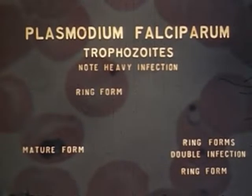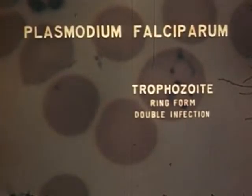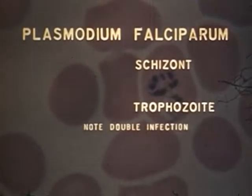Falciparum ring forms are generally more numerous and more prone to multiple infections and marginal forms than other species. Small rings may be only one-sixth the diameter of the red cell, but larger ones are the same size as vivax or malariae rings. Falciparum varies from the other species in that normally only ring forms and gametocytes, not the developing stages, are seen in peripheral blood.